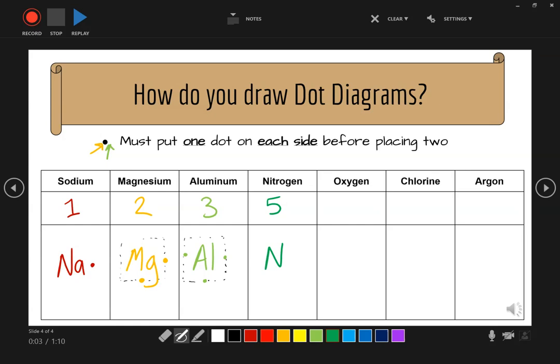Remember one dot on each side before placing two. So we're going to go one, two, three, four. I have one dot on each side, but I need five. So now it can double up. Five. And again, remember that they are on the sides of my imaginary box.